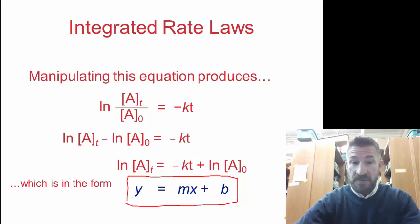We see Y equals mx plus b. The Y will be natural log of A over time. The B, or the intercept, is going to be at the zero point. Then here we see the slope is the rate law constant and X is going to be time.